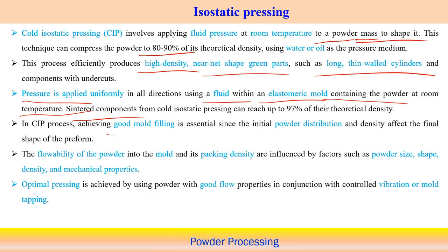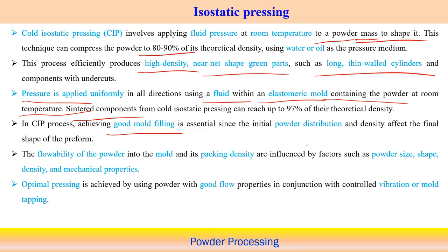Good mold filling is essential to achieve very complex shapes, as compressive load must reach equally into every corner of the mold cavity. The initial powder distribution and density affect the final shape of the powder form. When producing a complex shape, powder should reach every corner of the mold shape so that uniform pressure can be applied.